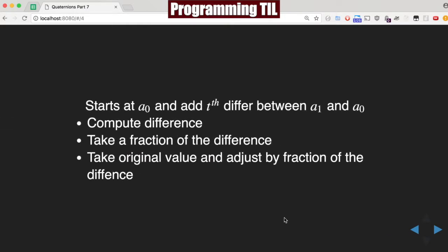And so what we're going to do is something very similar for SLURP. We're going to basically compute, start at a0 and add a tth difference between a1 and a0. So we're going to do the same thing with q0 and q1: compute a difference, take a fraction of it, add it to the original, and adjust by the fraction.